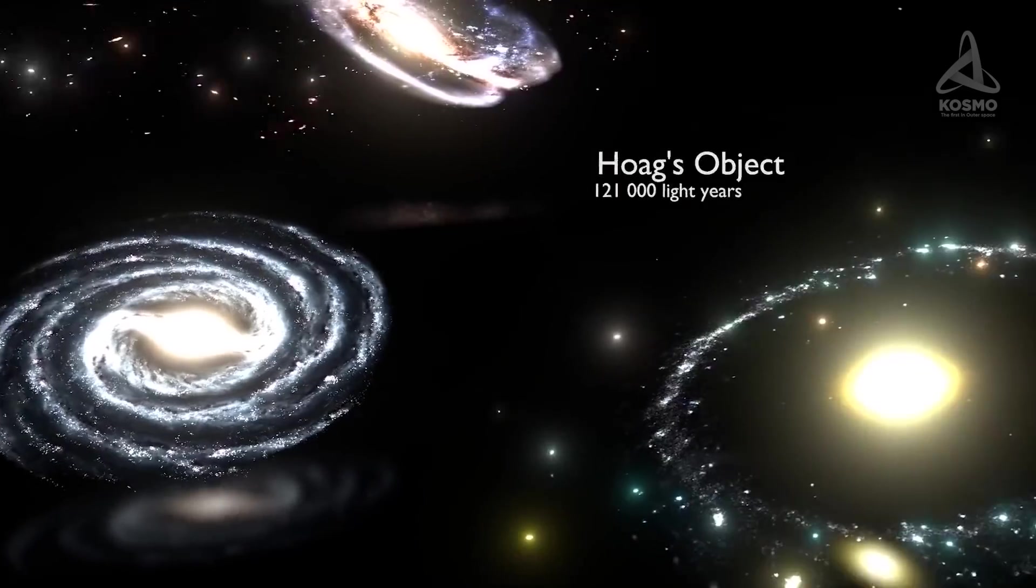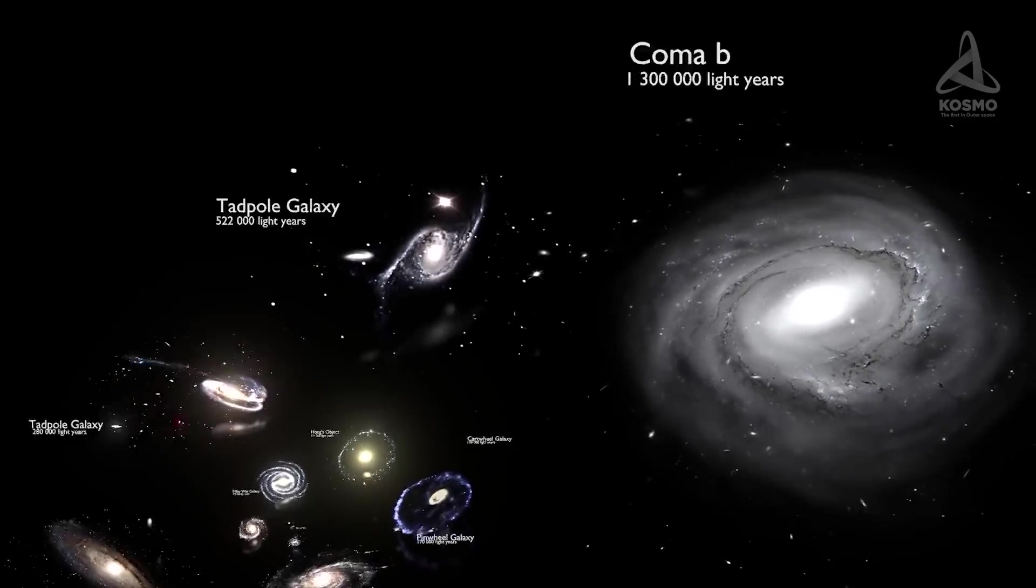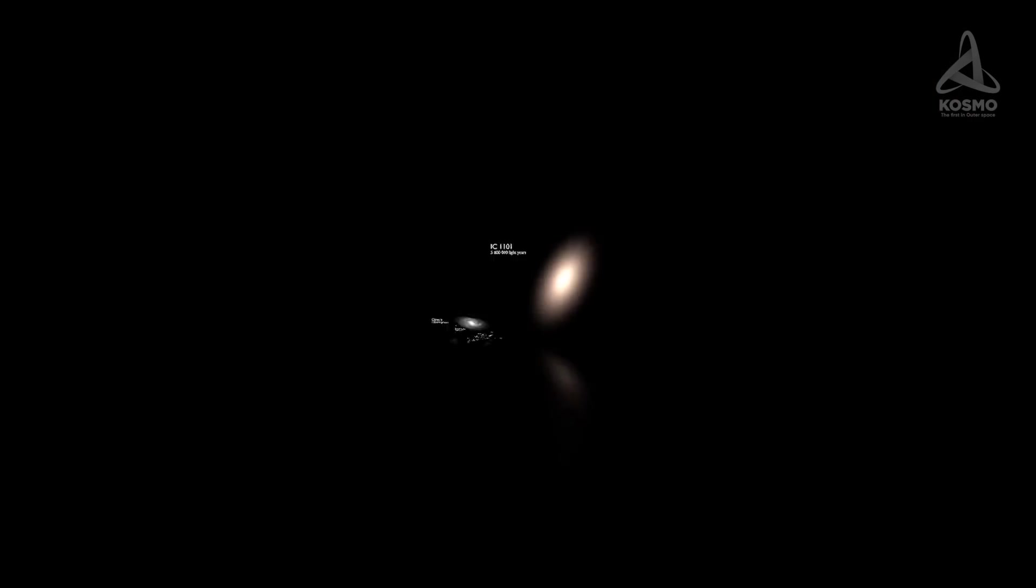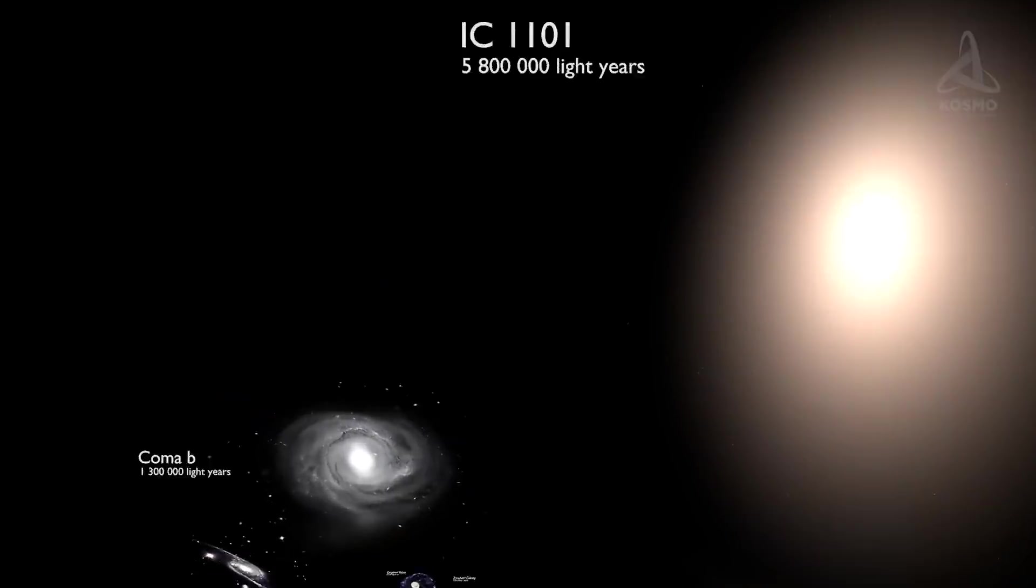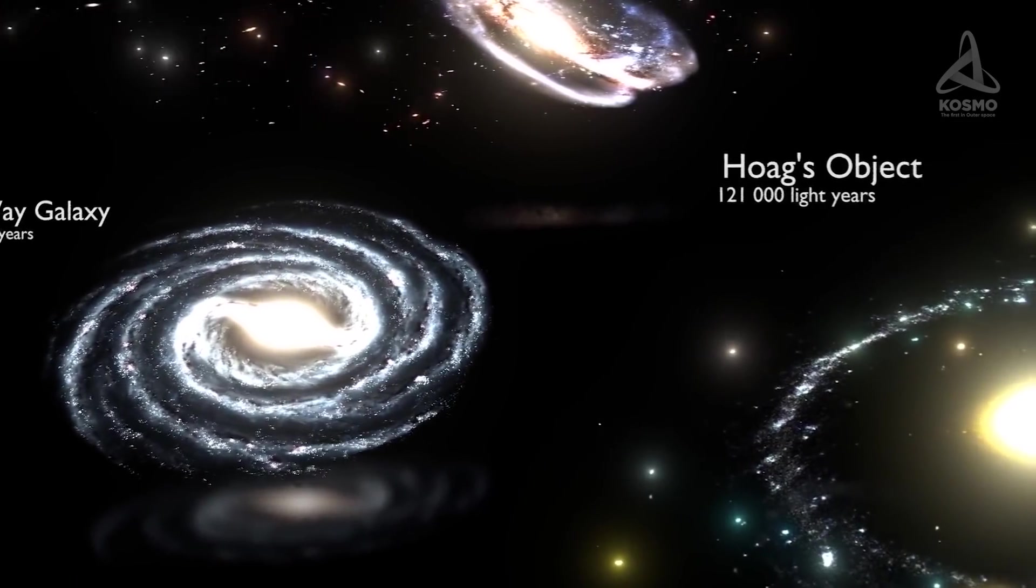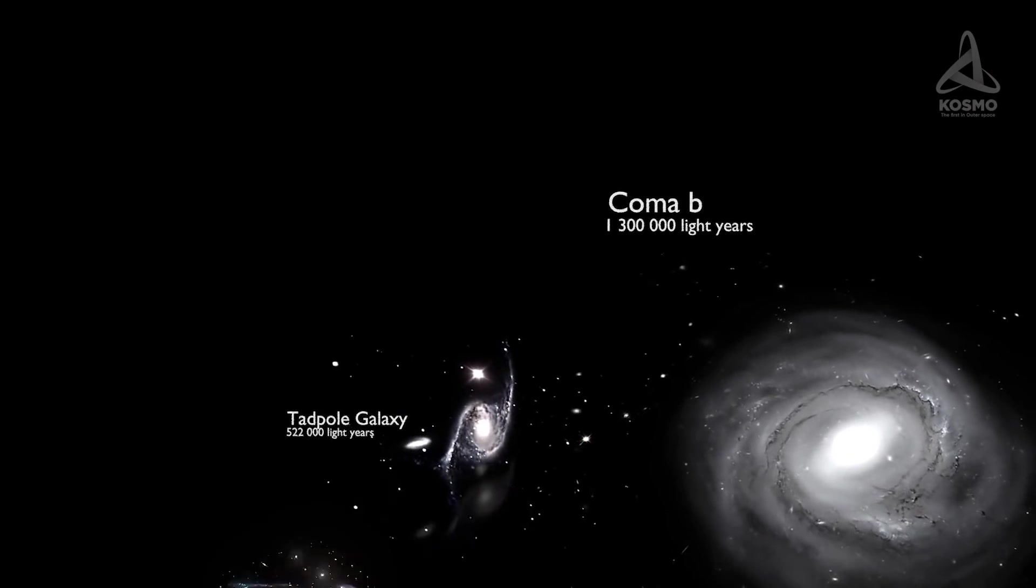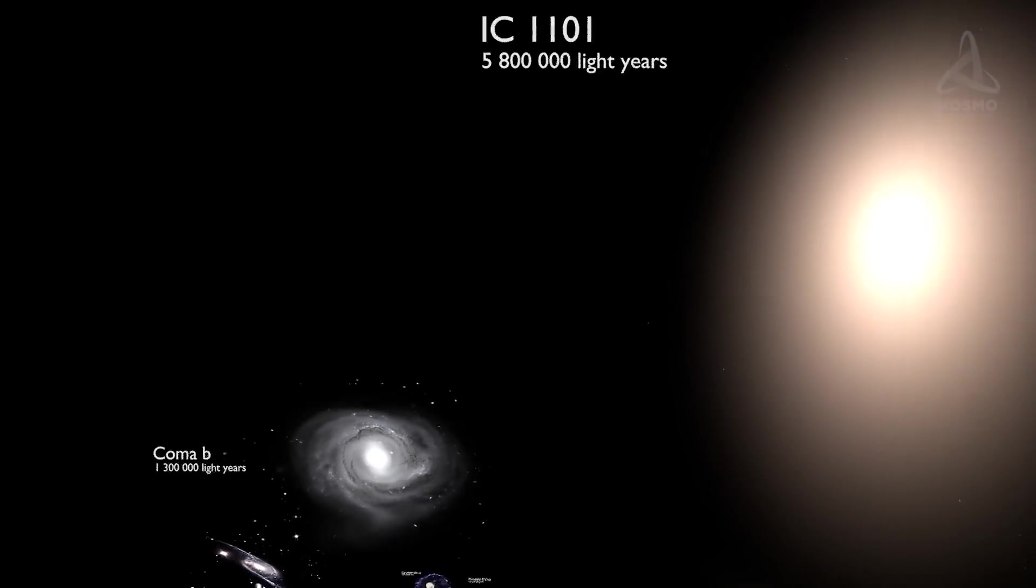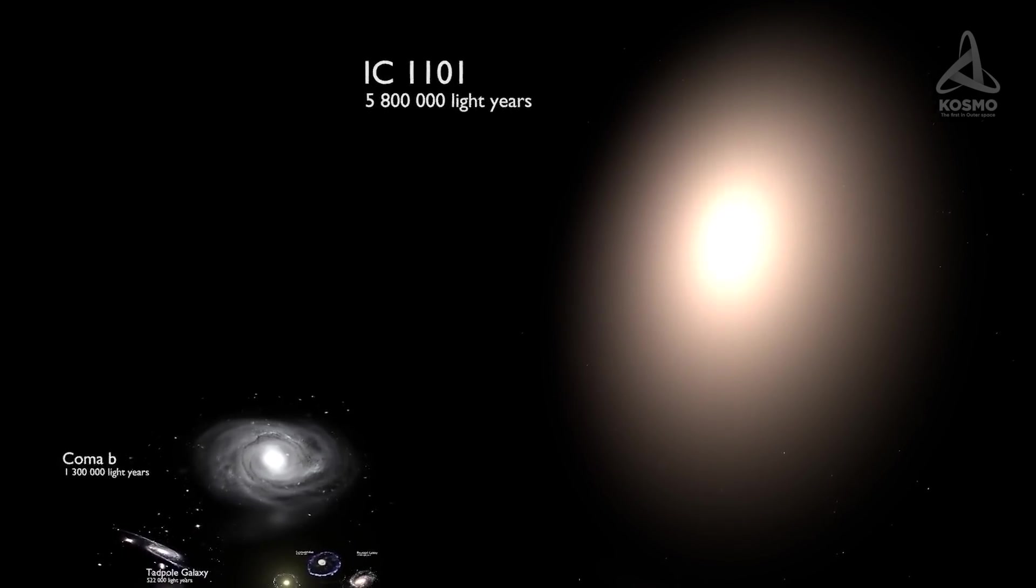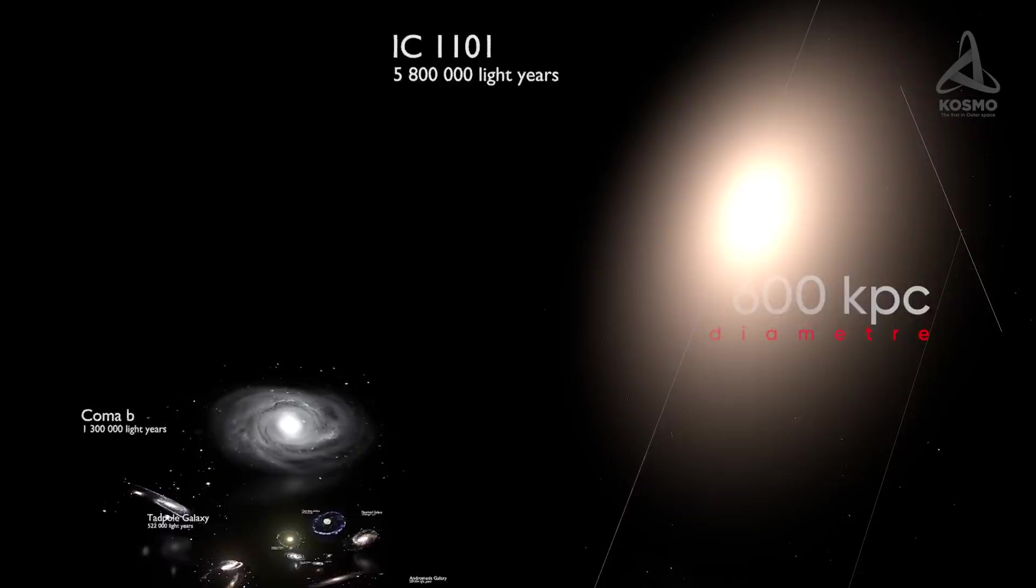The approximate diameter of each of them ranges from 5 to 250 kiloparsecs or 16 to 800 thousand light-years. Just to compare, the diameter of the Milky Way is 30 kiloparsecs, that is 100 thousand light-years. The largest galaxy known today is called IC 1101 and boasts the diameter of over 600 kiloparsecs.